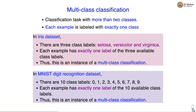Similarly, in the MNIST digit recognition dataset there are 10 class labels: 0, 1, 2, 3, 4, 5, 6, 7, 8, and 9. The idea is to look at the image of a digit and recognize what digit is present. Each example has exactly one label out of 10 available class labels. Hence, MNIST digit recognition is also an instance of a multi-class classification problem.